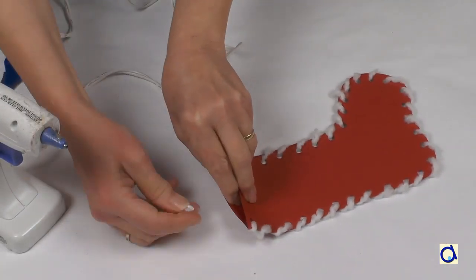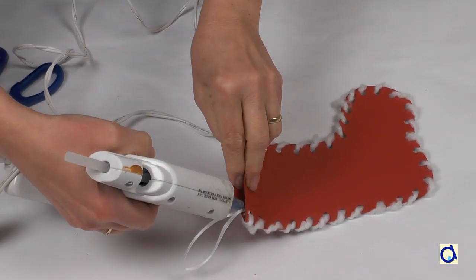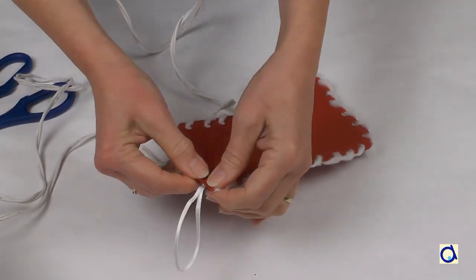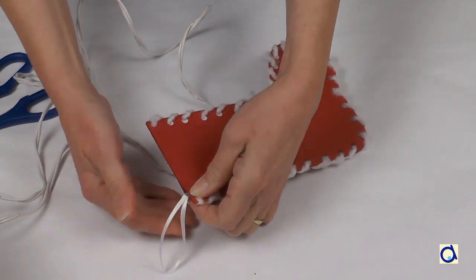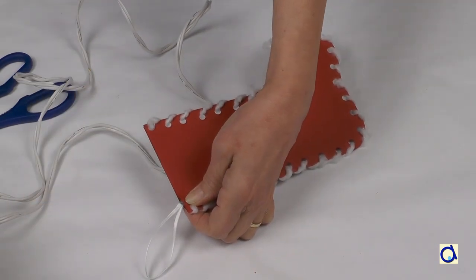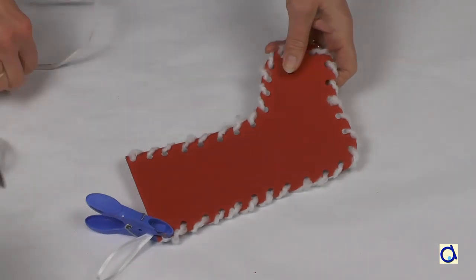Slide the knot inside the opening of the stocking and glue it either with a glue gun for a quick result or with white glue and let dry. You can add this loop even after you place the white trim on top of the stocking.